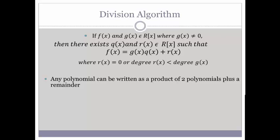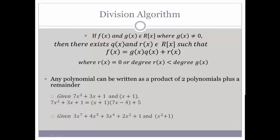Let's look at a couple of examples. Let's say we're given 7X squared plus 3X plus 1 as our F of X, and G of X is X plus 1. We meet our first condition: G of X is not zero. Then we know that there exists some Q of X and R of X such that this statement holds. Let's also look at a more complicated example with a degree 7 polynomial: we have this polynomial F of X and our G of X, and we can find a Q of X and an R of X such that that statement is true.